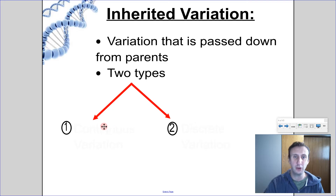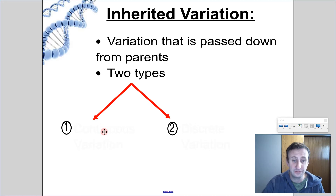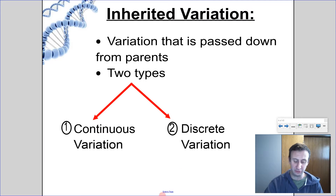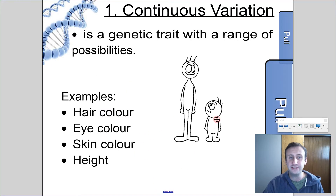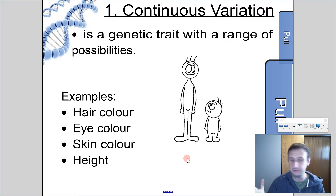To start off, when we take a look at variation, we have two different types of variation in traits. We can either say that a trait has what we call continuous variation or discrete variation. Continuous variation is where we have a range of possibilities — unlimited possibilities in between. It's not just yes or no; it's a spectrum of different options.